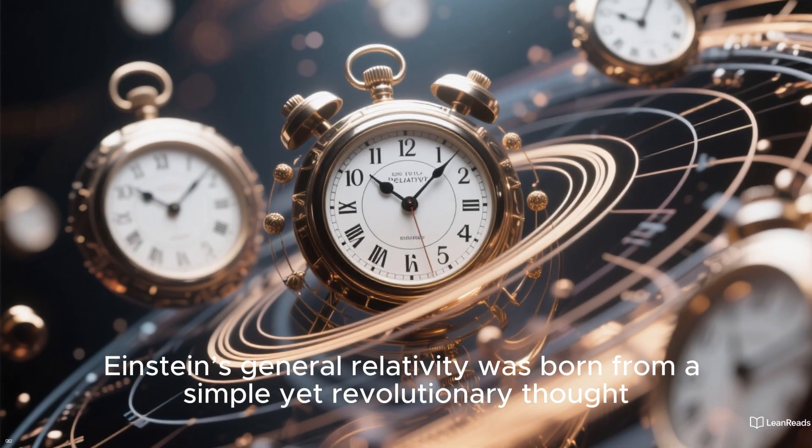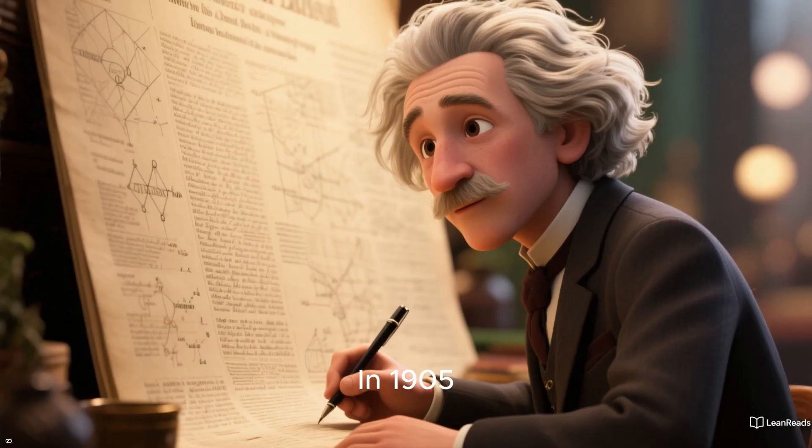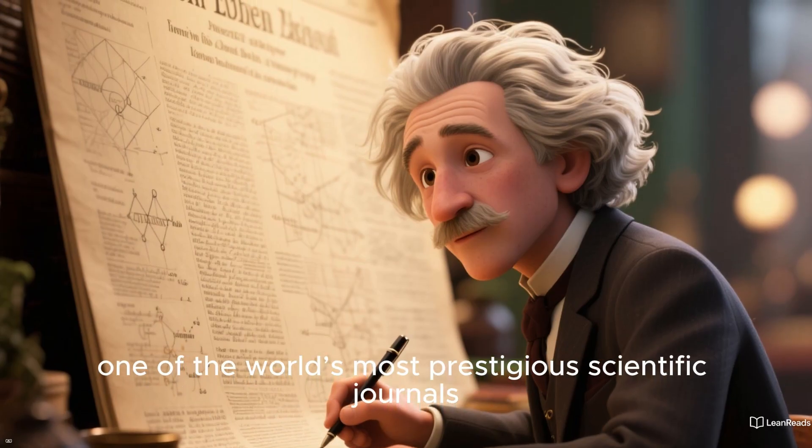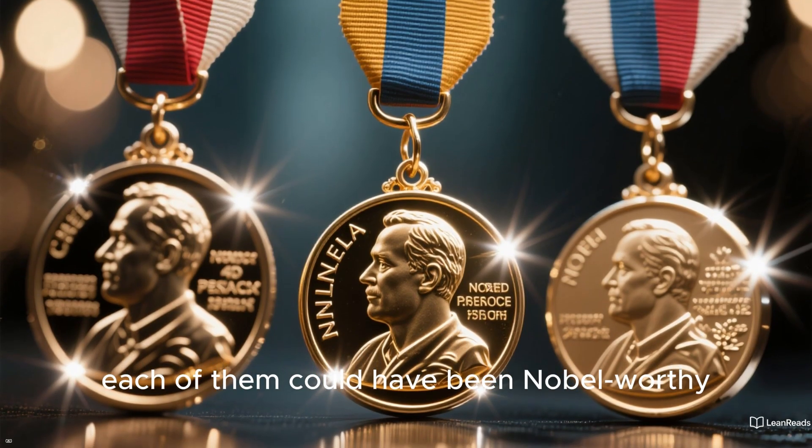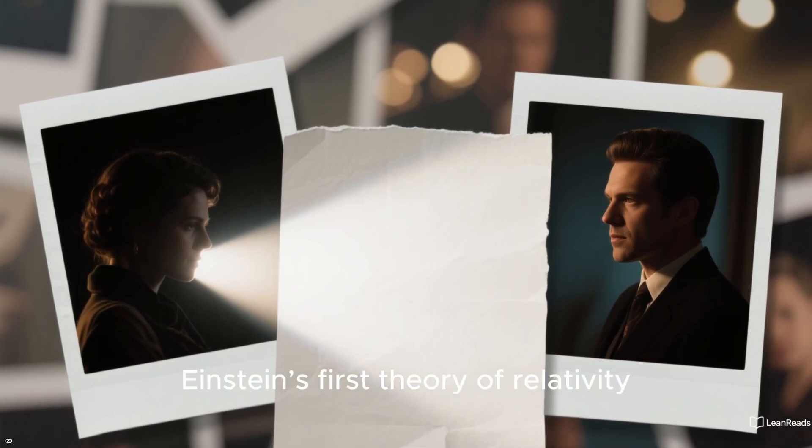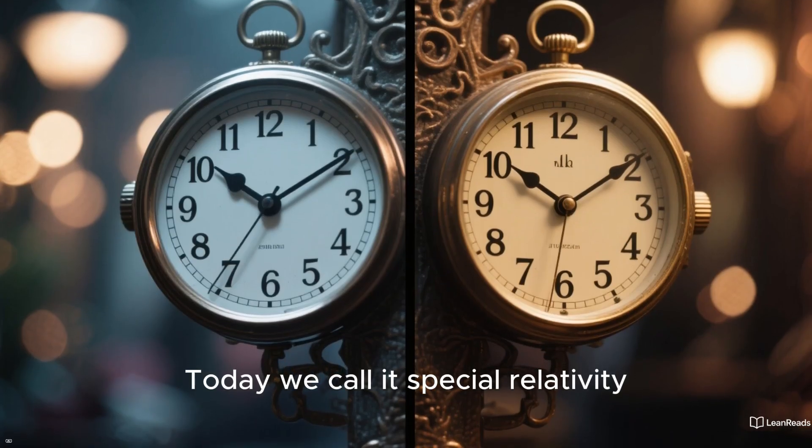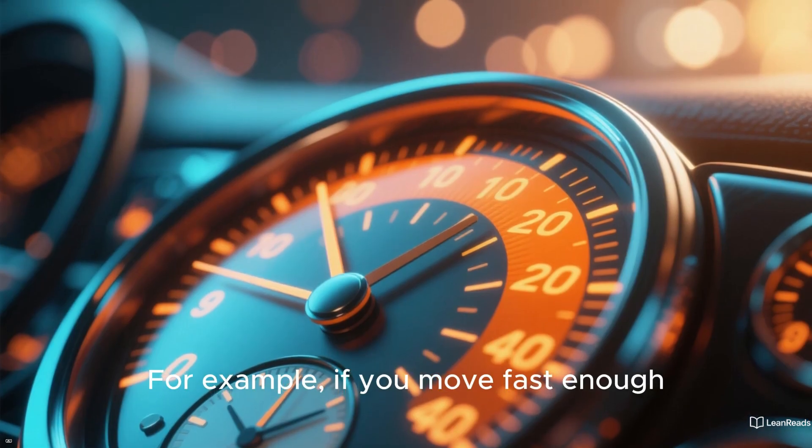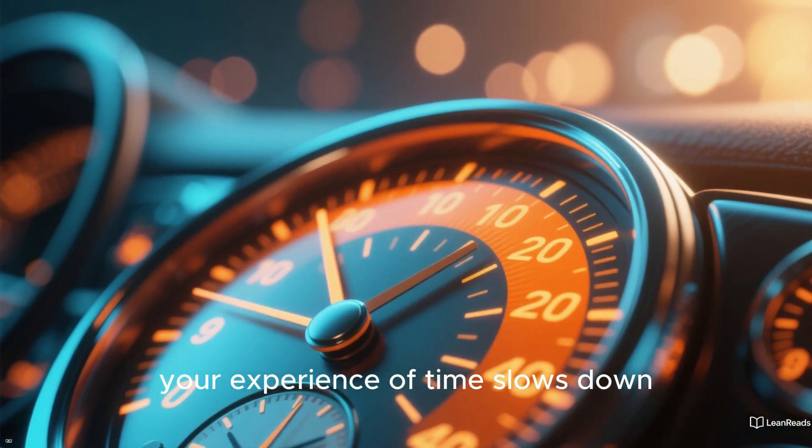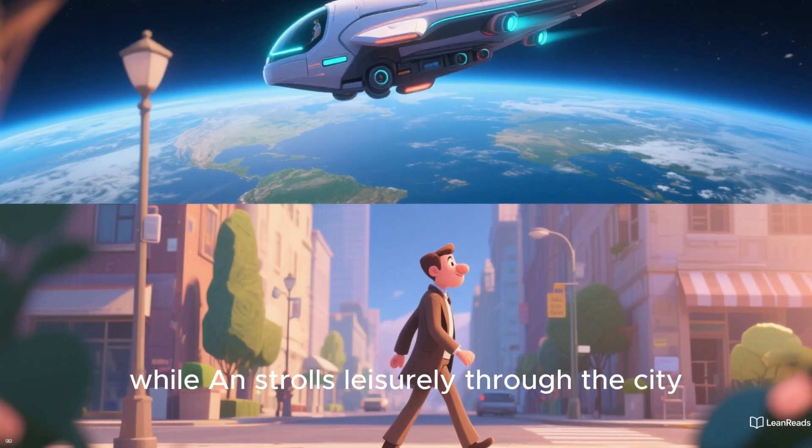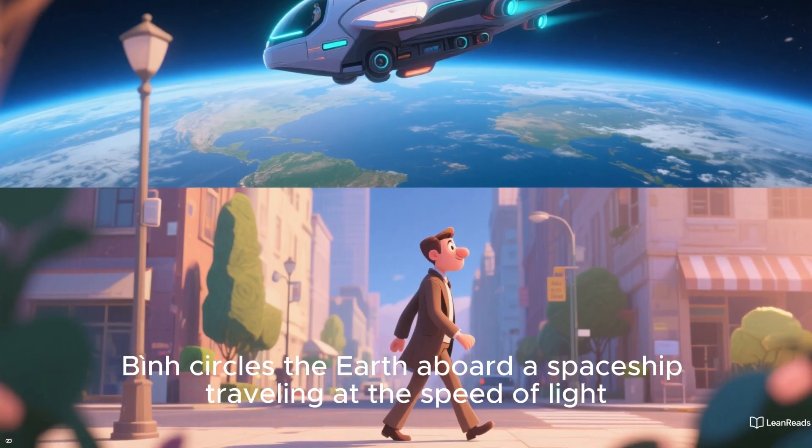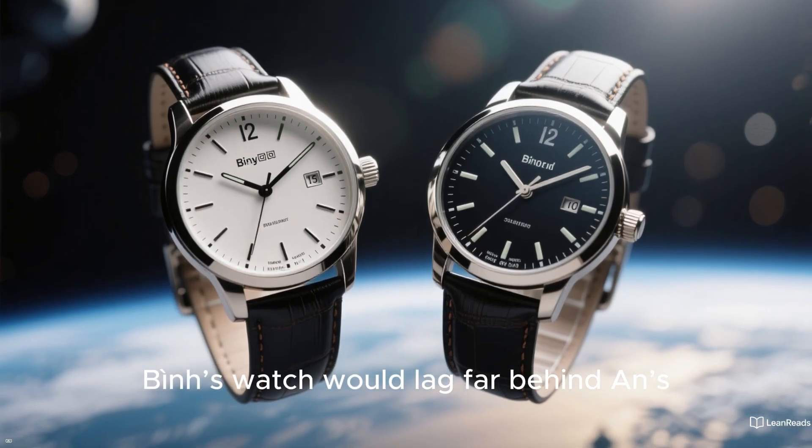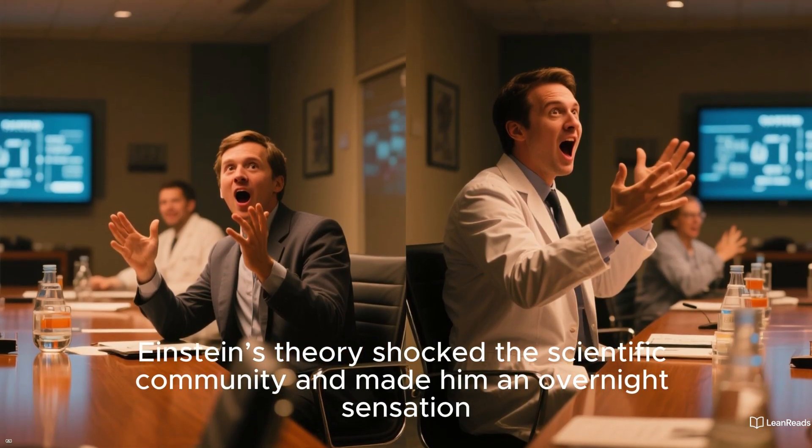Einstein's general relativity was born from a simple yet revolutionary thought. In 1905, a young man named Albert Einstein sent three papers to Annalen der Physik, one of the world's most prestigious scientific journals. Remarkably, each of them could have been Nobel-worthy. The third paper stood out the most. It introduced Einstein's first theory of relativity, today we call it special relativity. In essence, Einstein proposed that time is relative and depends on the conditions of the observer. For example, if you move fast enough, your experience of time slows down. Imagine this scenario: while Ann strolls leisurely through the city, S circles the Earth aboard a spaceship traveling at the speed of light. Time for S would pass much more slowly than for Ann. Upon landing, S's watch would lag far behind Ann's.